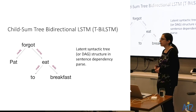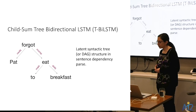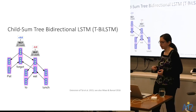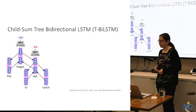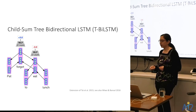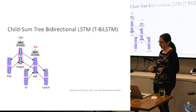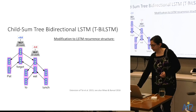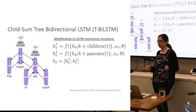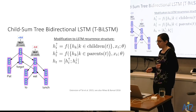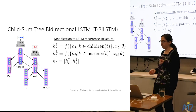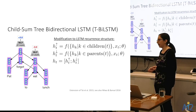Sentences also have a latent syntactic tree structure, which we can encode as an inductive bias. In the tree-structured LSTM, a node can have multiple previous hidden states corresponding to its multiple children, reflected in the recursive update function F. We have two tree-structured LSTMs — one going upward from the leaves to the root and one downward — and again concatenate the hidden states, select those corresponding to event tokens, and pass them through a similar MLP regression module.